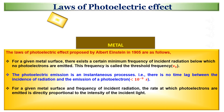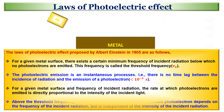For a given metal surface and frequency of incident radiation, the rate at which photoelectrons are emitted is directly proportional to the intensity of the incident light. Above the threshold frequency, the maximum kinetic energy of the emitted photoelectron depends on the frequency of the incident radiation, but is independent of the intensity of the incident radiation.